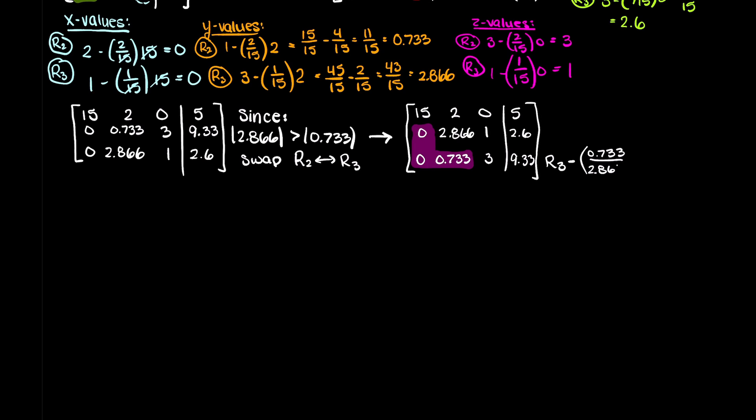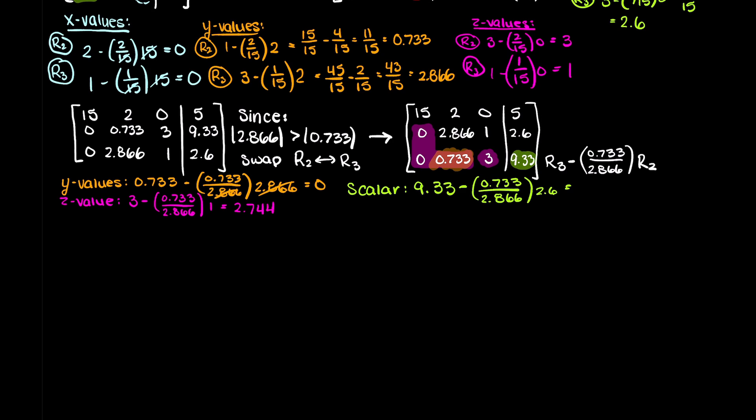Repeating the calculations we did above, we can convert the remaining pink elements to 0 and fully solve our matrix. Therefore, we have row 3 minus our scaling factor, which is 0.733 over 2.866 times row 2. After completing these calculations here, you can see that we are left with the following matrix.